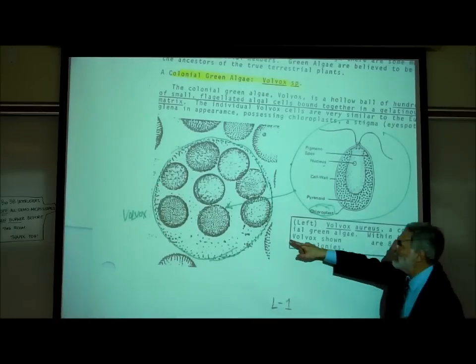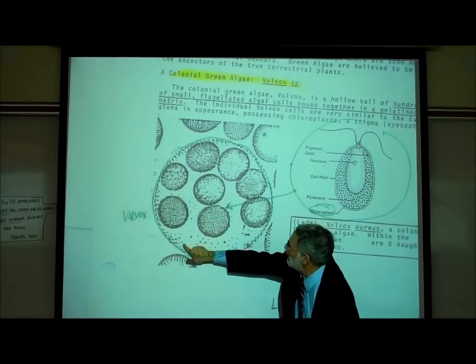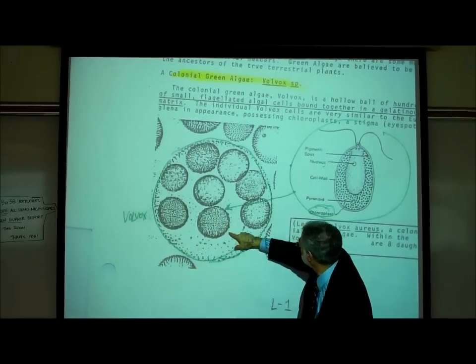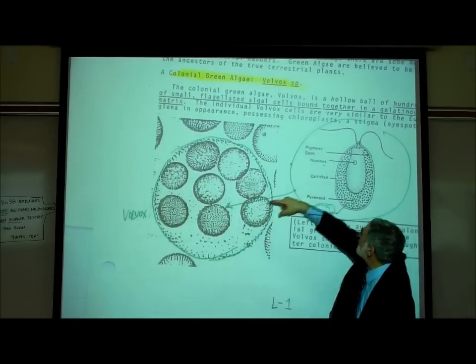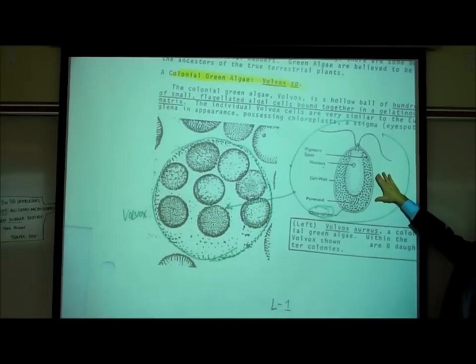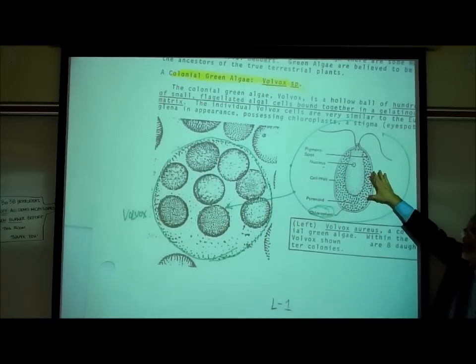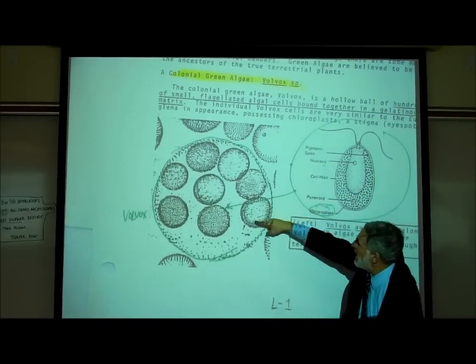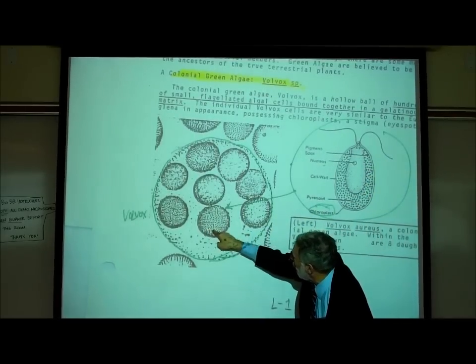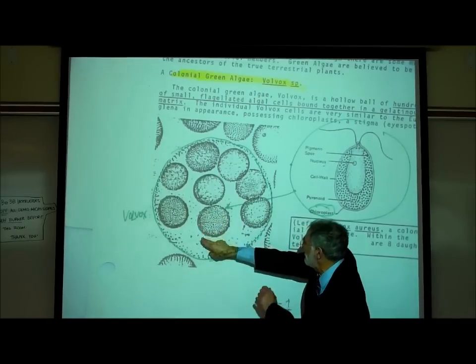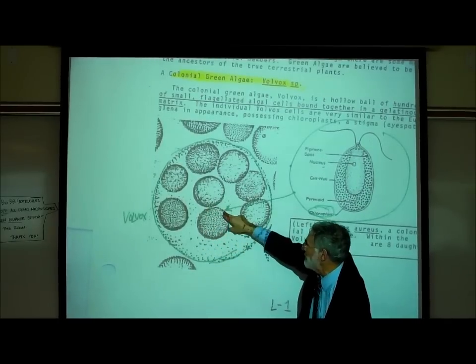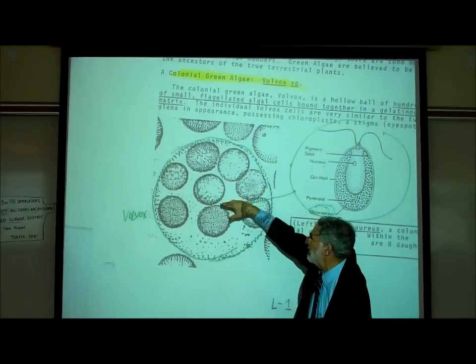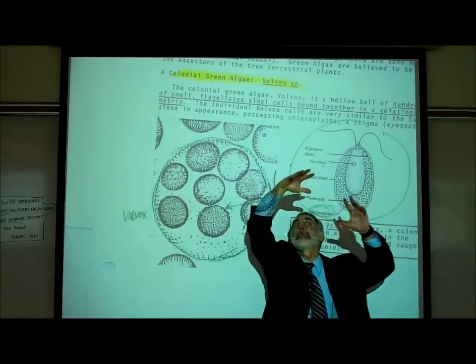Each of these colonies is made of - you'll see these little tiny speck green speckles. Each of these little green speckles is one of these cells. This is what each of these plant cells looks like. Notice it has flagella, they move. They actually are thousands of them grouped together in a colony. And that's a baby colony, here's a baby colony, inside a mother colony.